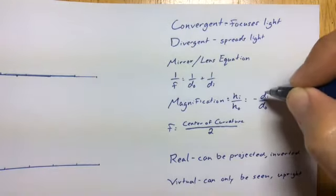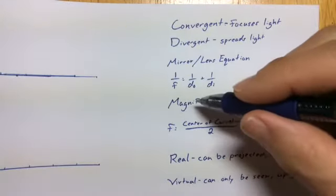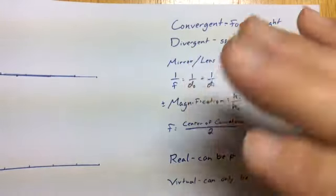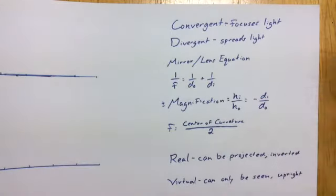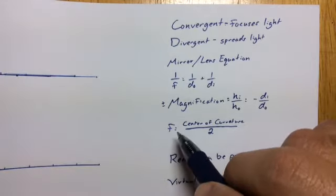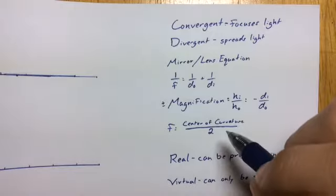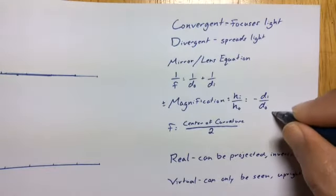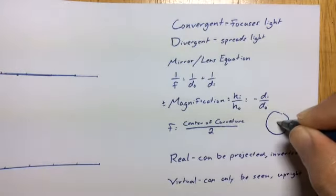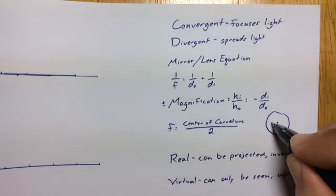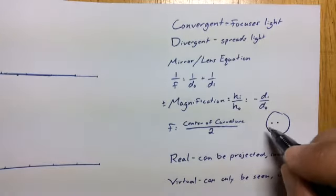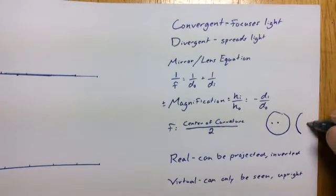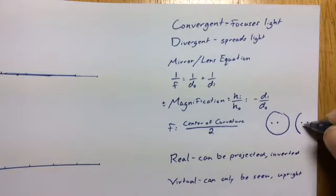Depending on the sign of magnification — positive or negative — that tells you if the image is going to be upright or flipped upside down, because sometimes when you look through lenses or mirrors things appear upside down. The focal length equals the center of curvature divided by two. We're talking about things that are spherical, so for a sphere or circle it has a radius of curvature with a center right in the middle, and the focal length appears halfway between the center and the mirror surface.